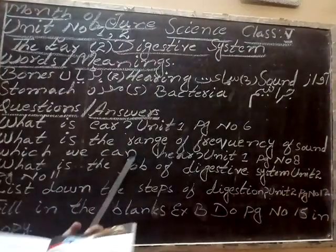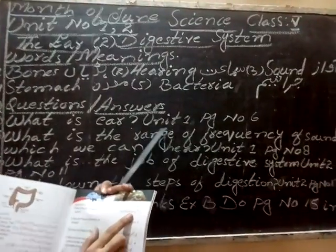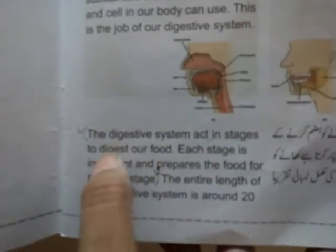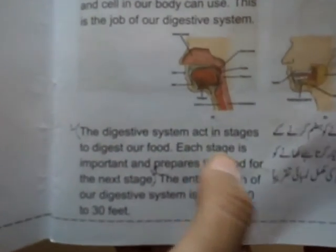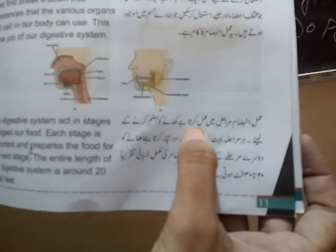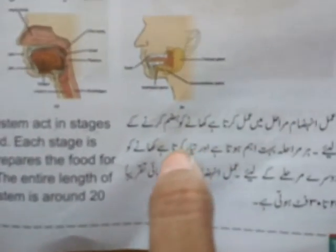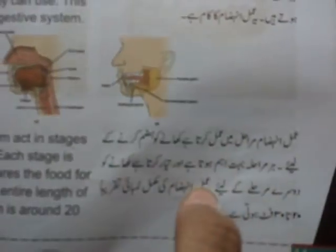What is the job of the digestive system? Unit number 2, page number 11. Amle nizam ka kaam kya hota hai? Page number 11 par aayen, the second paragraph: The digestive system acts in stages to digest our food. Each stage is important and prepares the food for the next stage. Amle nizam marhaayil mein amal karta hai, khane ko hasm karne ke liye har mahla bahut eham hota hai aur tayaar karta hai khane ko doosre mahle ke liye.